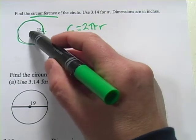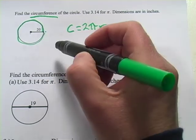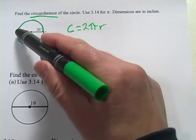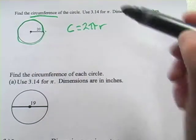And the radius, remember, is the distance from the center of the circle to the edge of the circle, and it's half of the diameter, which would be all the way across the circle through the middle.